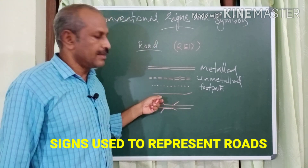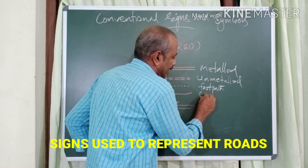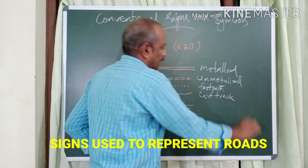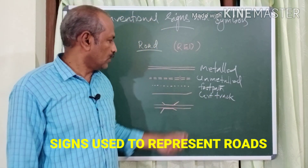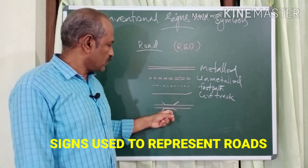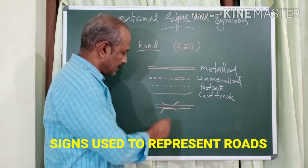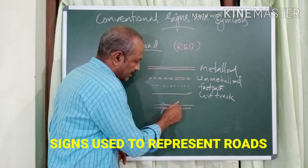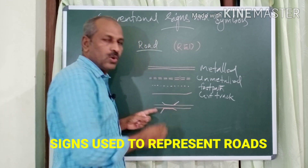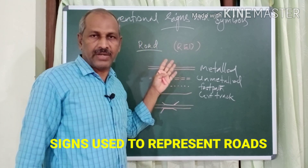A single line in red color represents a cart track — like a horse cart track or bull cart track. And this symbol represents a road with a bridge. You can see the symbol of a bridge here. All these road symbols are in red color.